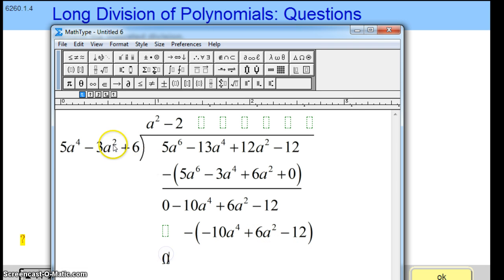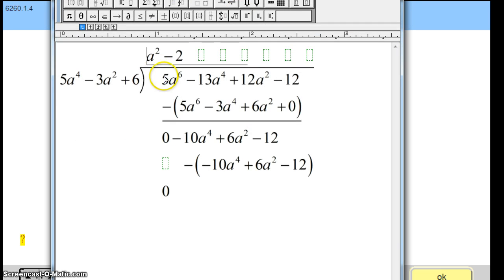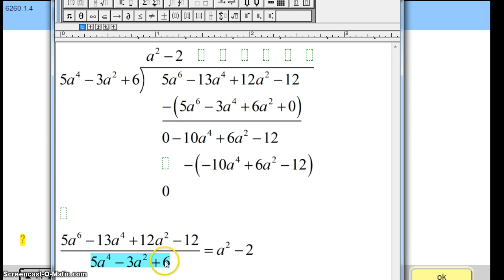So you can see, dividing this by this, we get a squared minus 2 with no remainder. That means a squared minus 2 times this equals this. Our original problem was 5a to the sixth minus 13a to the fourth plus 12a squared minus 12, divided by 5a to the fourth minus 3a squared plus 6. We get a squared minus 2. If you multiply both sides by the denominator, you get the product of these things. And that's it. That is polynomial long division.